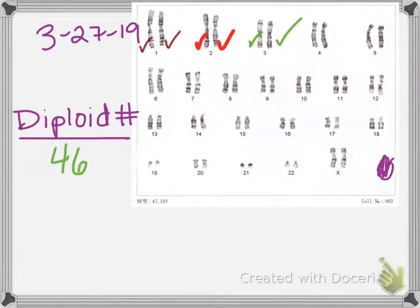If we take a skin cell, a cheek cell, if we take a cell from your bones or a cell from your leg muscles, it's going to have 46 chromosomes.